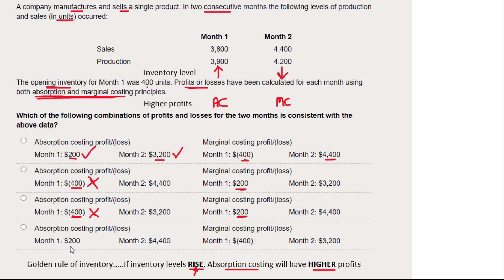Option four: it makes a profit under absorption costing and a loss under marginal costing in month one — that does fit. But in month two, absorption costing has a profit of 4,400 and marginal costing is lower, and that doesn't fit. In month two, marginal costing is supposed to win because stock levels went down. Therefore option four can't be right. We can be confident that option one is correct and the other three are wrong.